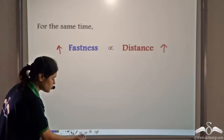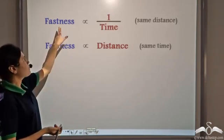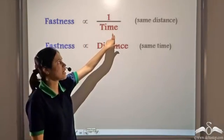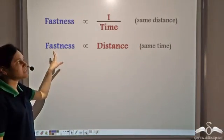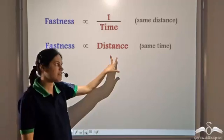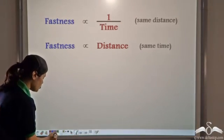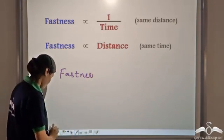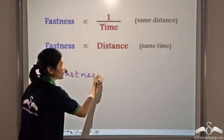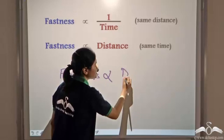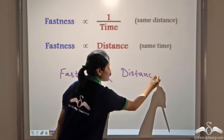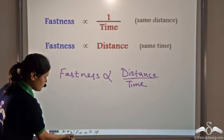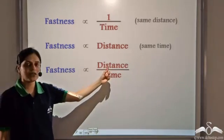So we have got these two proportionalities. First: fastness is proportional to one divided by time — that is, fastness is inversely related to time for the same distance. Second: fastness is directly proportional to distance travelled for the same time. Combining these two, we get that fastness is proportional to distance divided by time.